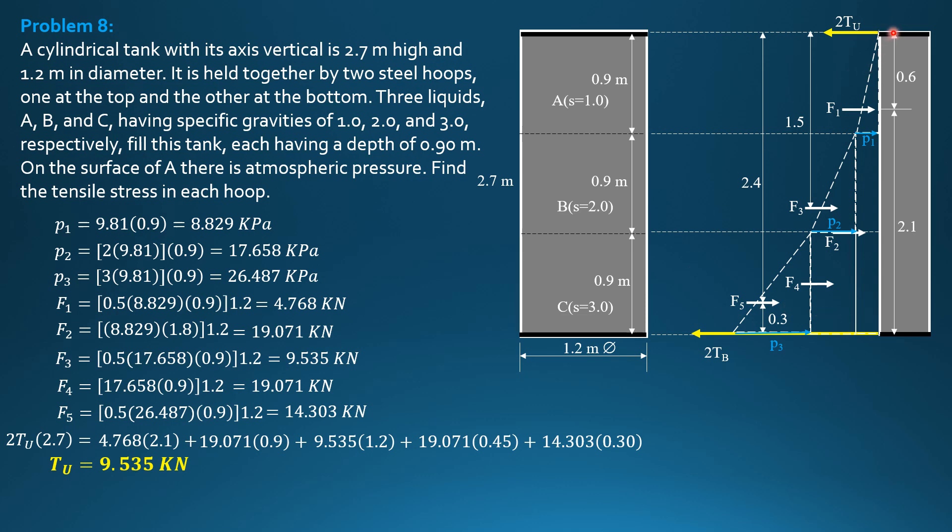Then summation of moments about the upper hoop equals 0. So 2 times tension in the bottom hoop times 2.7 is equal to F1, 4.768 times 0.6 plus F2, 19.071 times 1.8 plus F3, 9.535 times 1.5. Plus F4, 19.071 times 2.25. Plus F5, 14.303 times 2.4. So computing using your calculator, tension in the bottom hoop is equal to 23.84 kilonewtons.